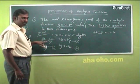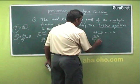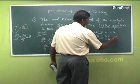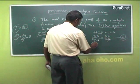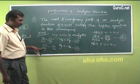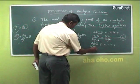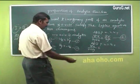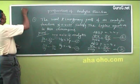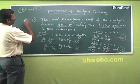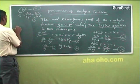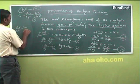Now differentiate equation 1 (u_x = v_y) partially with respect to y: ∂²u/∂y∂x = ∂²v/∂y². Call this equation 3. Differentiate equation 2 (u_y = −v_x) partially with respect to x: ∂²u/∂x∂y = −∂²v/∂x². Call this equation 4. Subtracting equation 4 from equation 3, the left side gives 0, so ∂²v/∂y² + ∂²v/∂x² = 0.